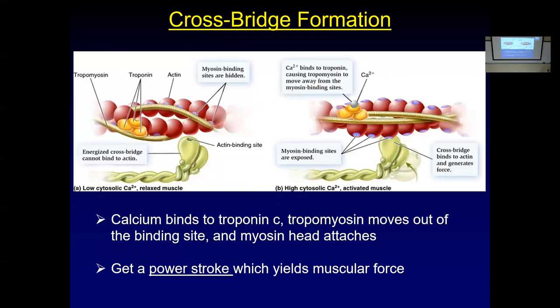Myosin really wants to bind to actin. When it does bind, the myosin head interacts with one binding site and forms something called a crossbridge. Once you get a crossbridge, you get force production. However, that force production may or may not result in movement — it is not necessarily guaranteed.